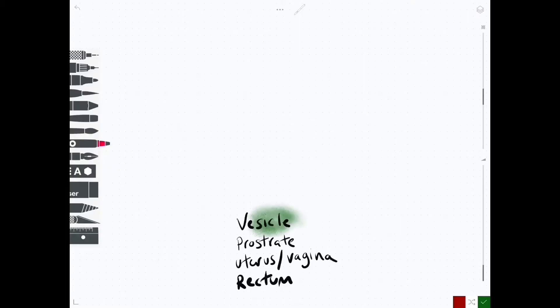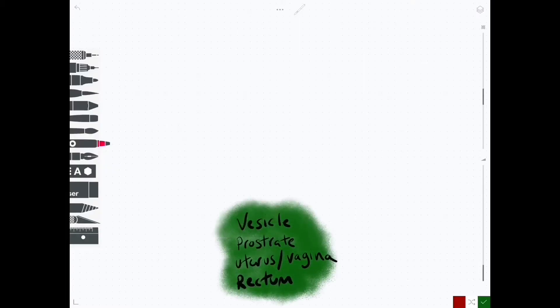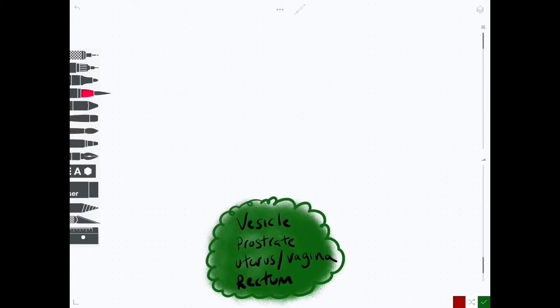We're going to look at the subsidiary plexuses first of all. We've got the vesicle plexus which is surrounding the bladder, the prostatic plexus, the uterovaginal plexus and the rectal plexus. Of course some of that anatomy is relevant to the male, some to the female, some to both.